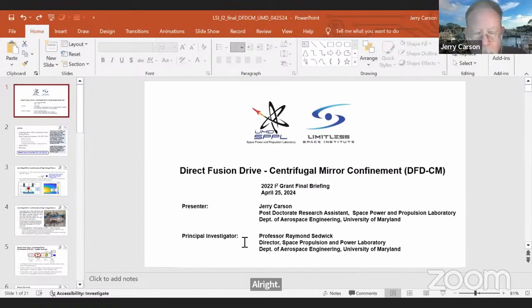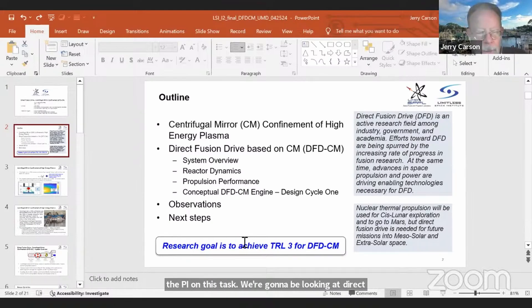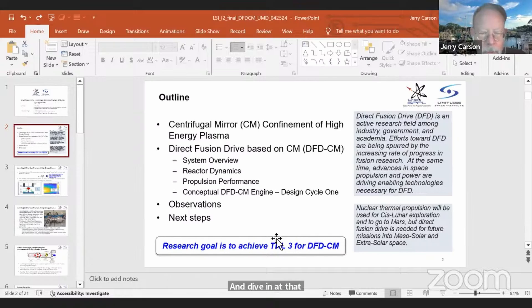So, again, just like to repeat the thanks to Sonny and LSI for sponsoring this research. I think we've seen a lot of interesting things today, and hopefully we'll walk through a couple of results which you might find interesting. I'll be presenting today for myself and for Ray, who is the PI on this task. We're going to be looking at direct fusion drive based on centrifugal mirror confinement, and we'll start off with just a review of some stuff we talked about last time. How centrifugal mirror confinement works and how we integrate that with a propulsion system, and dive in at that point to some new developments in reactor dynamics and propulsion performance. And then talk a little bit about our conceptual engine that we're using for our balance of plant and mass properties estimate.